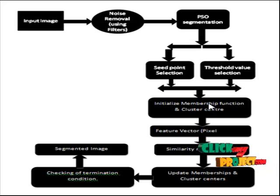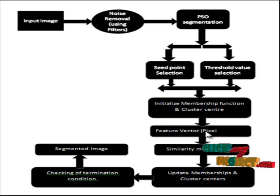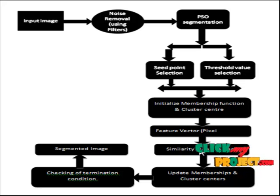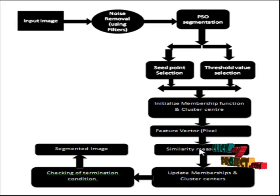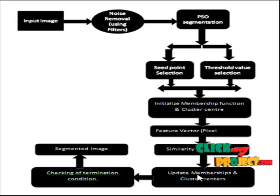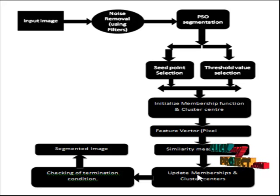After initializing membership functions, we extract the feature vectors for the given image. From the feature vectors, we find the similarity measurements — whether the given image is similar to any other pixels. In each step, it updates the membership functions and cluster centers for the segmented result, and these pixels are considered as a segmented result.